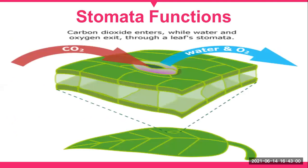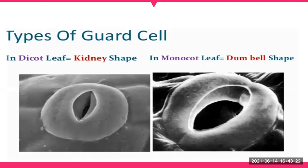When the stoma is open, carbon dioxide enters the plant while water and oxygen exit through the leaf stomata. In the case of dicot leaves, the guard cells are kidney-shaped, whereas in monocot leaves they are dumbbell-shaped.